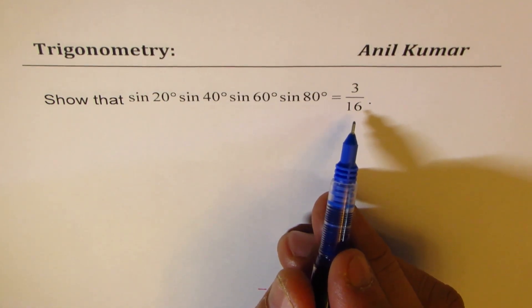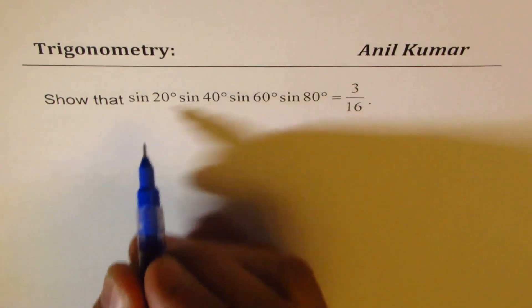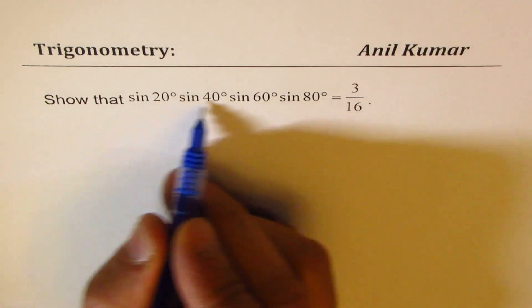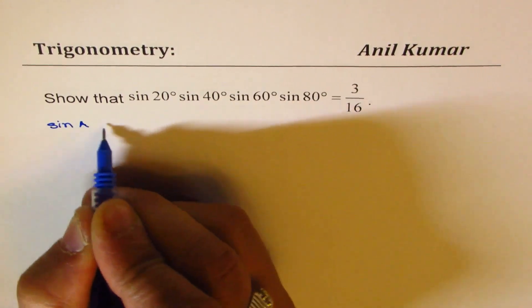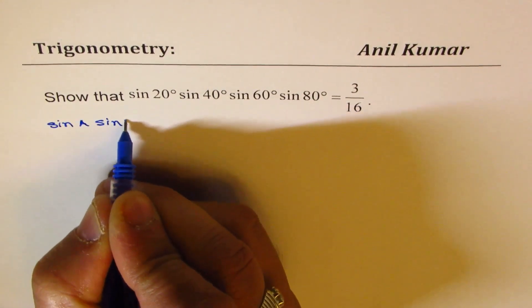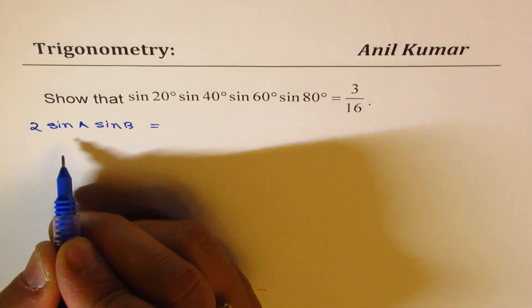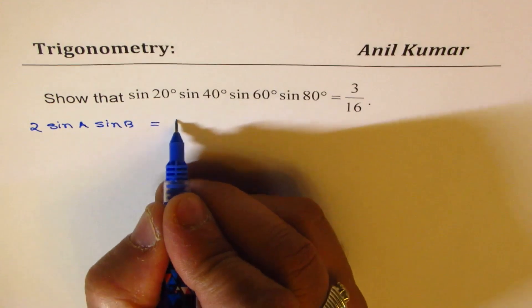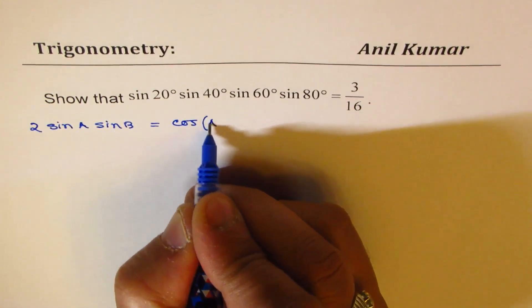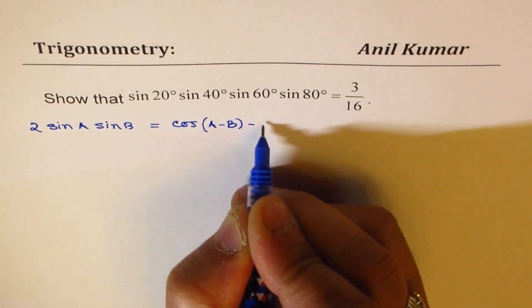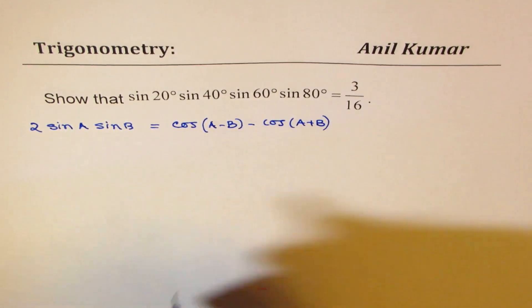So I'm going to use few formulas to prove it. Let me share those formulas first with you. First one should be product of sines. So when we have sin A, sin B, we have a formula relating them. Twice of this is basically equal to cos(A - B) minus cos(A + B). So that is one of the formulas which will be used.